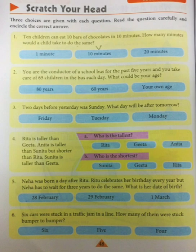Now let's do the next part. Rita is taller than Gita. Anita is taller than Sunita, but shorter than Rita. Sunita is taller than Gita. Who is the tallest and who is the shortest?